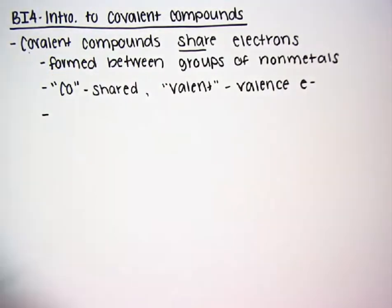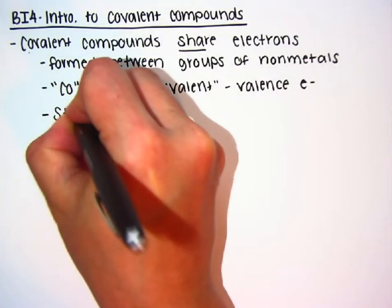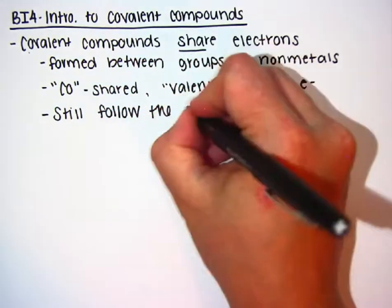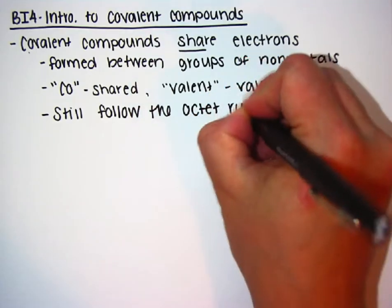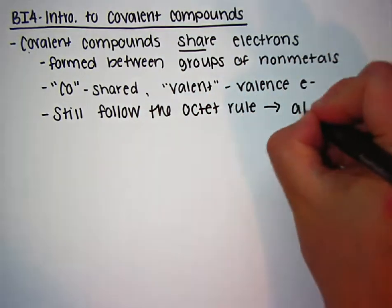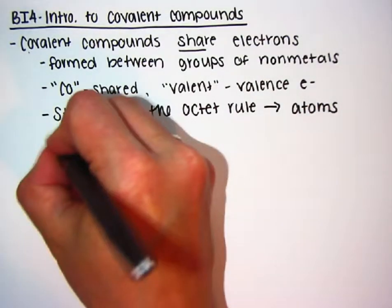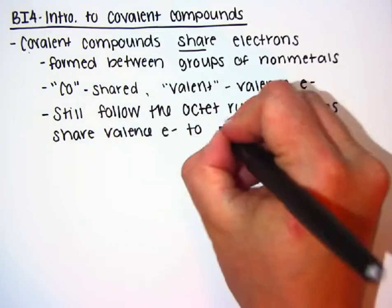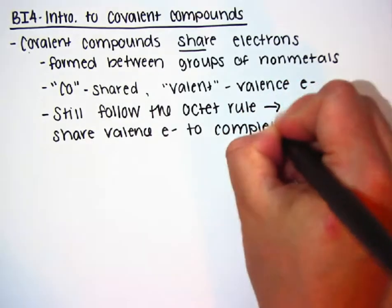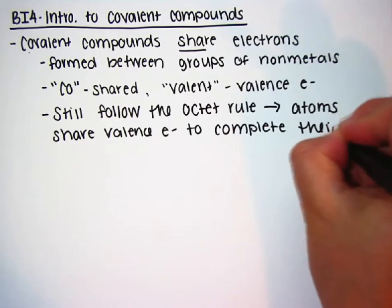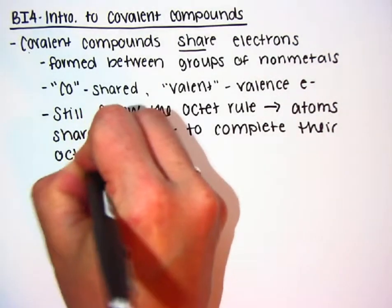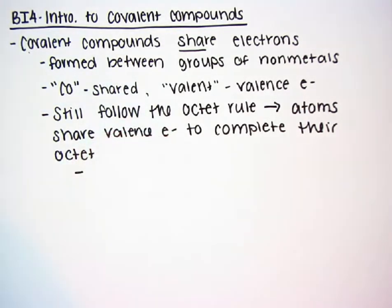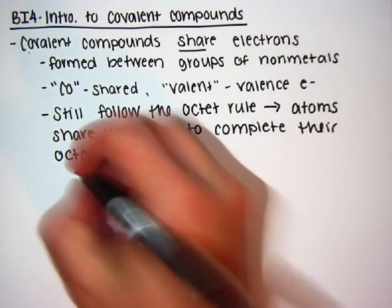Why do they share electrons? Because they still follow the octet rule. Atoms share valence electrons to complete their octet. The prefix oct means eight, so the octet rule is that atoms want eight valence electrons.